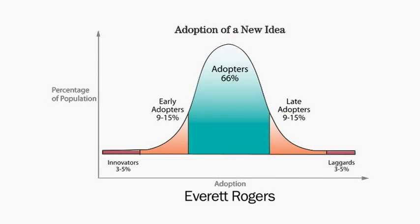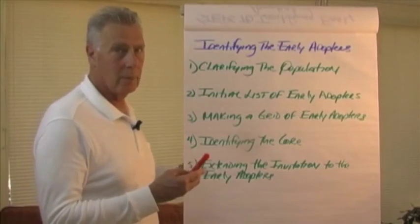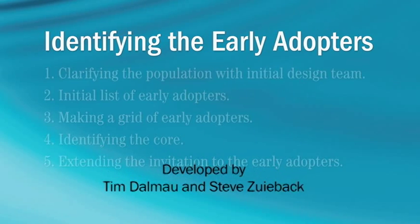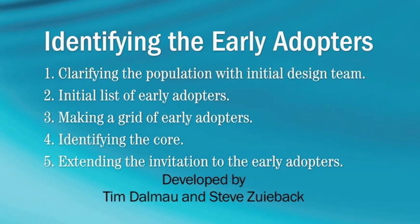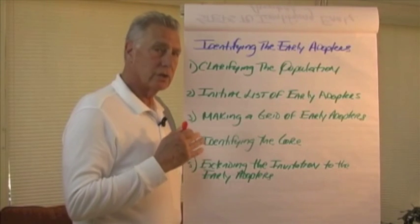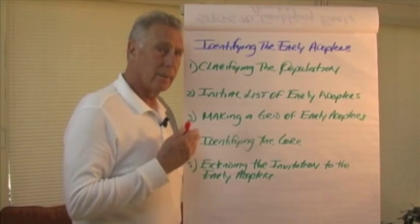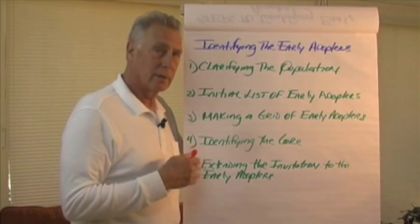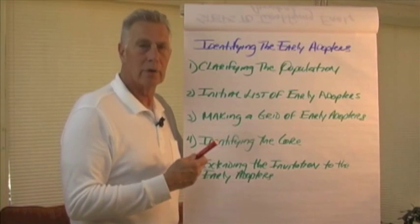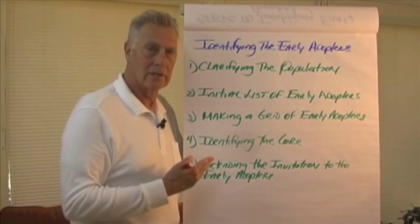In this process of actually identifying these key stakeholders, which Tim Dalmo and I developed based on the work of Everett Rogers, there are five sequential steps to take. There is also a link on my website with more detail about how to follow this process, but the purpose of this video is to walk you through these steps and make them a little simpler to use.